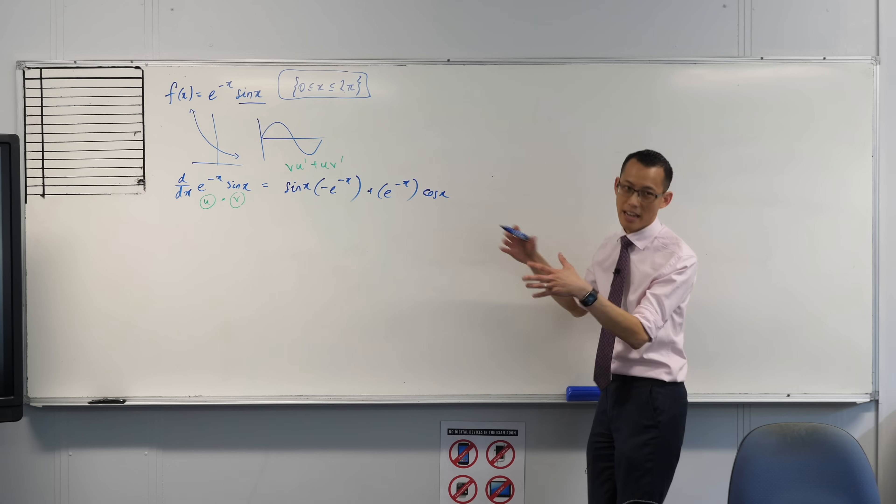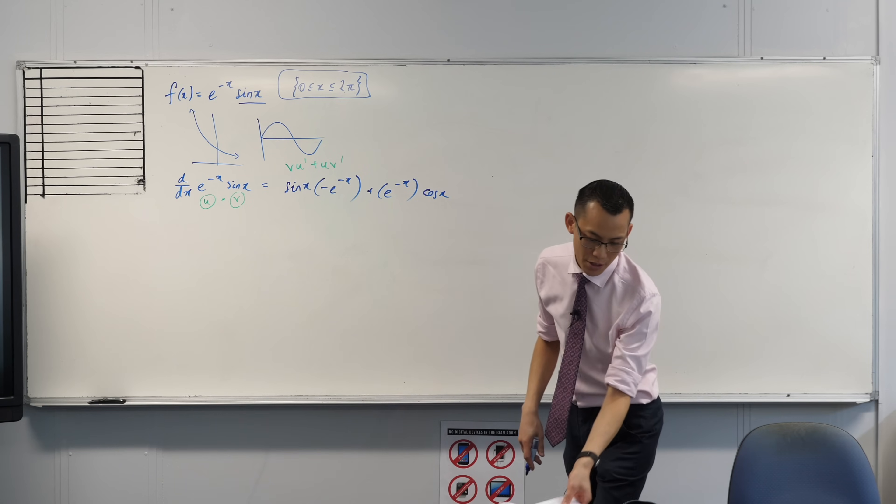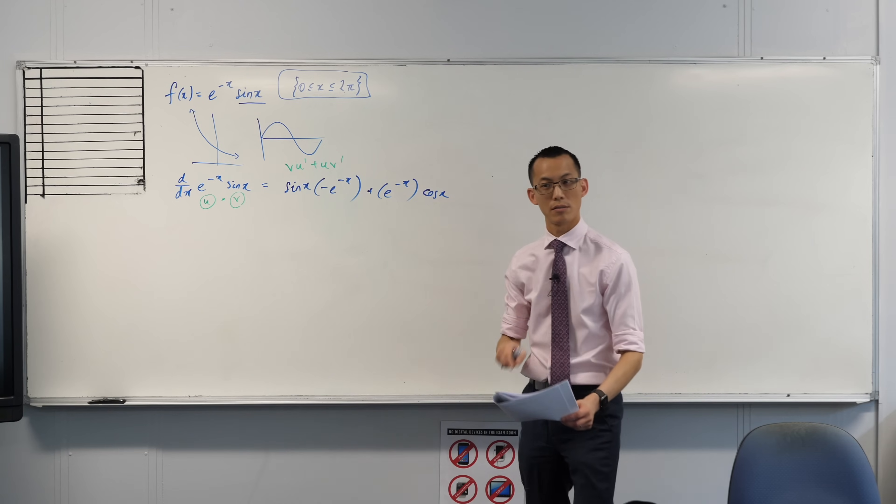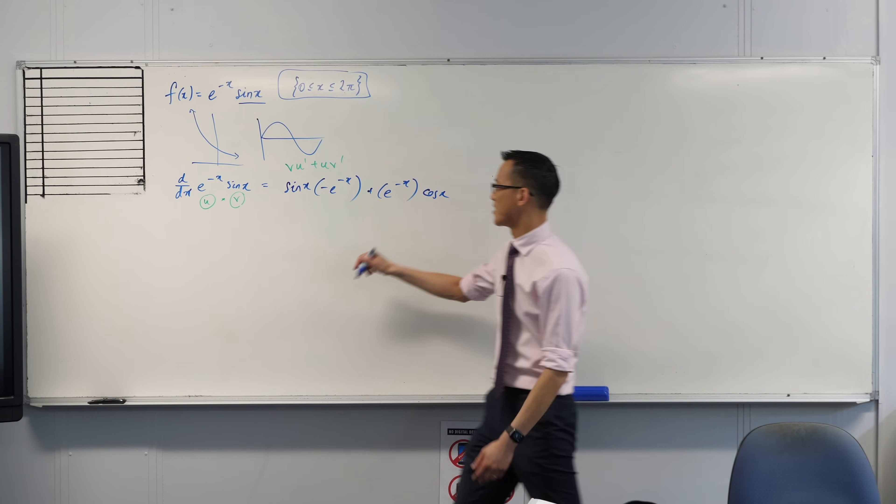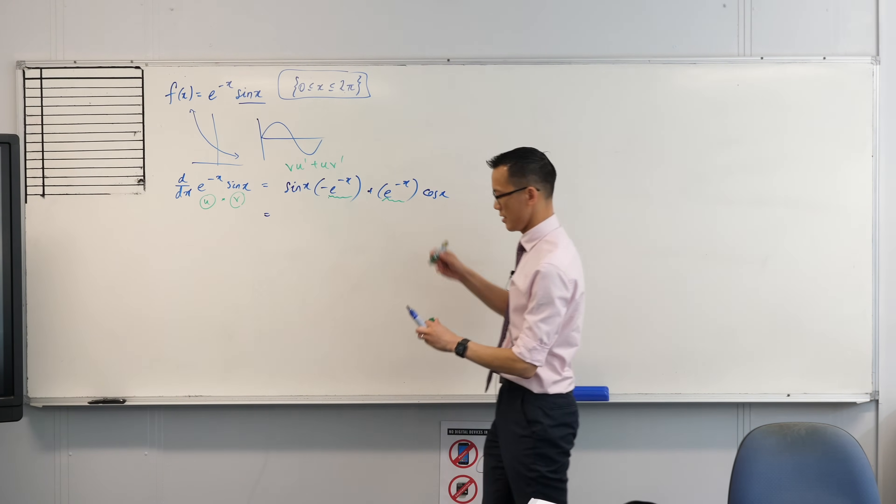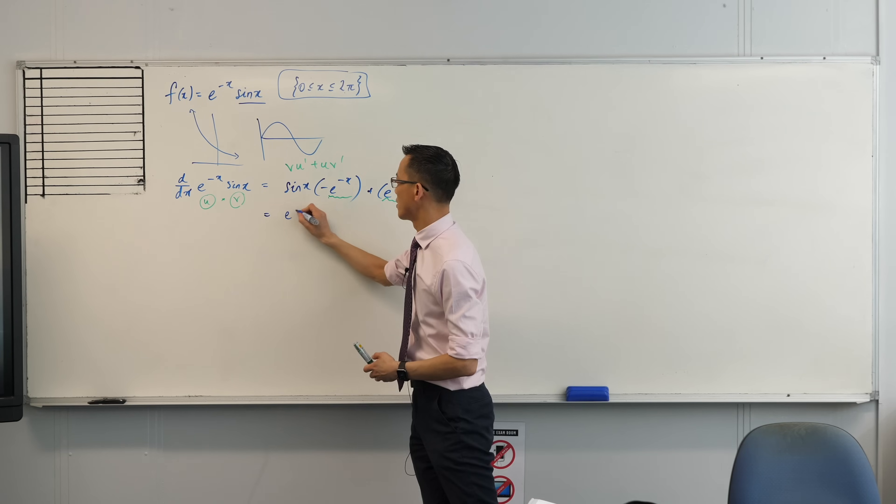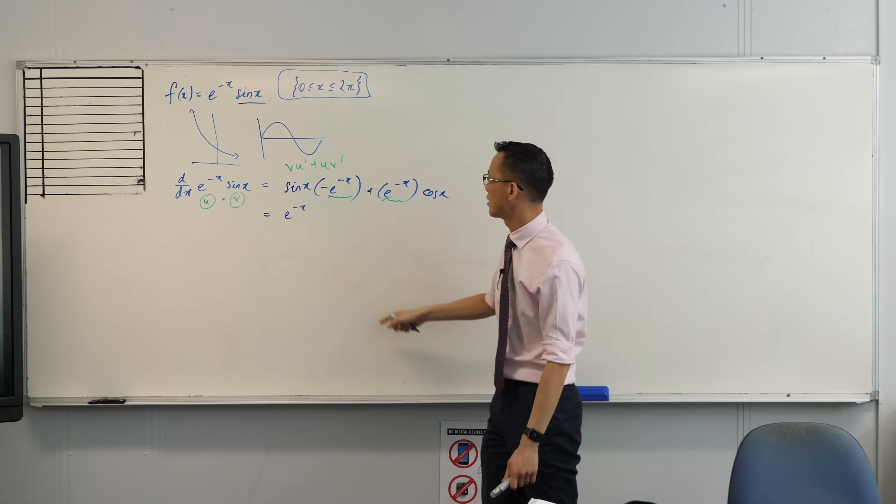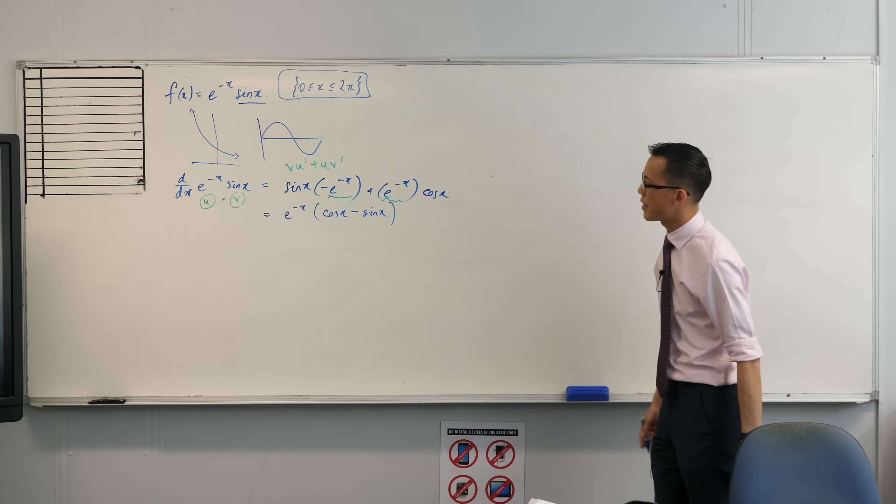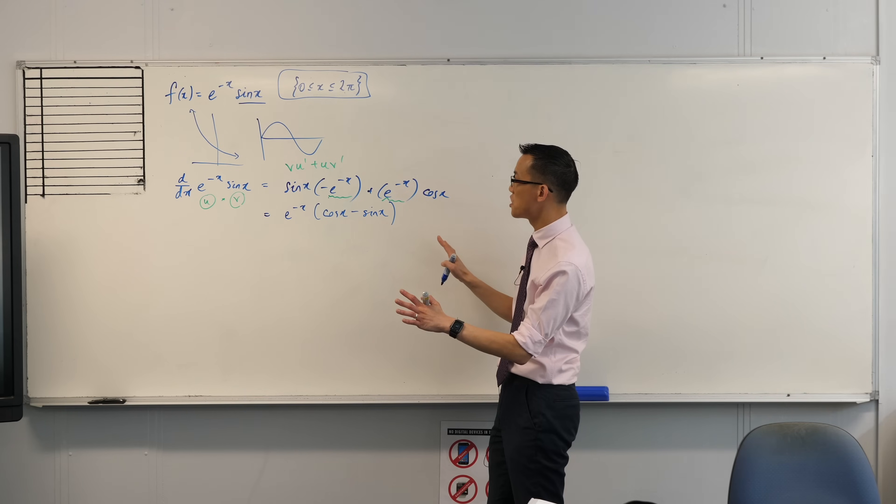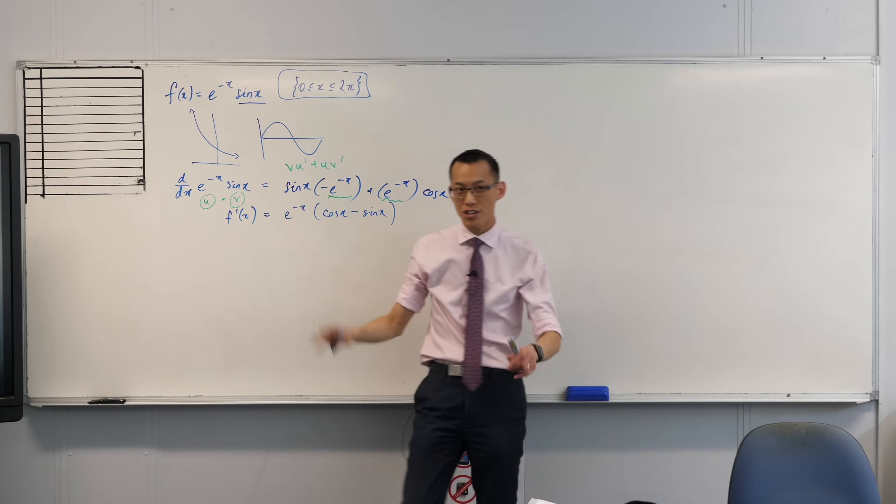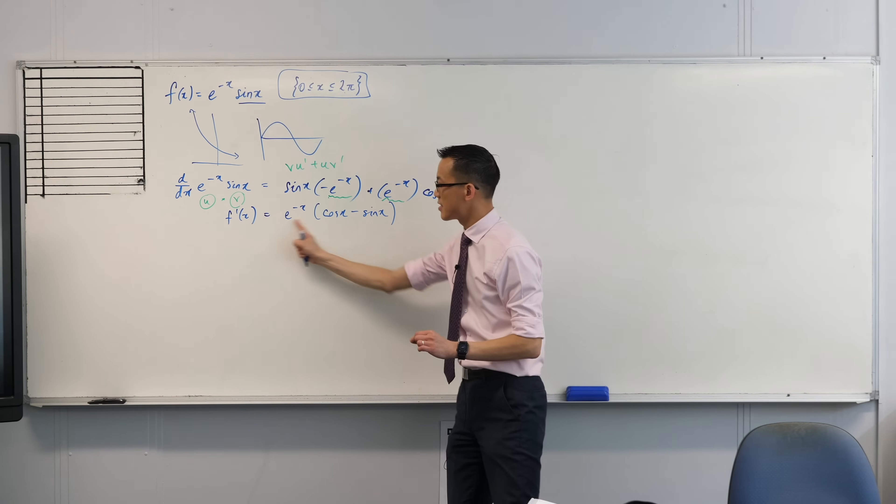From here, I get a result. I can tidy this up, which I will in a moment. But what they really want me to do is find out when this is equal to zero. That's what find the coordinates of the stationary points means. So let's go ahead and tidy this up a little bit. I've got a common factor here and here. I'm going to factor that out. Let's put that cos x at the front, minus sign e^(-x) at the back. So this is our derivative, f dash.